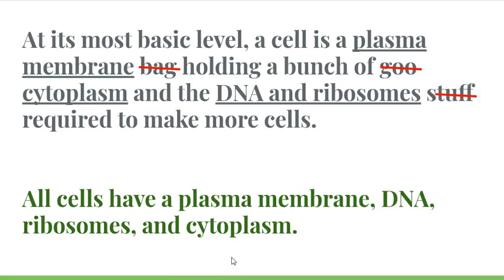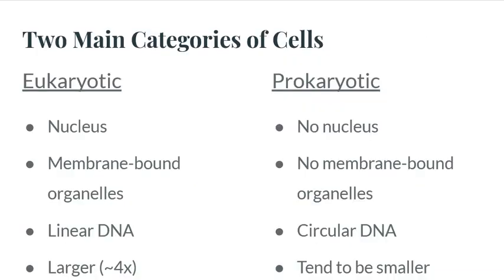We have two main categories of cells: eukaryotic and prokaryotic. Eukaryotic cells have a nucleus, membrane-bound organelles, and linear DNA, and they tend to be larger. However, prokaryotic cells like the cyanobacterium Anabaena can be quite large, and some eukaryotic cells can be quite small — so there are areas of overlap where you could have larger prokaryotic cells than eukaryotic cells.